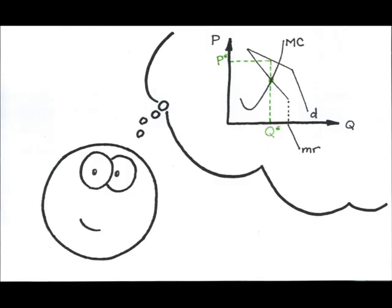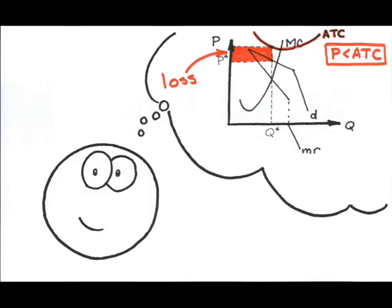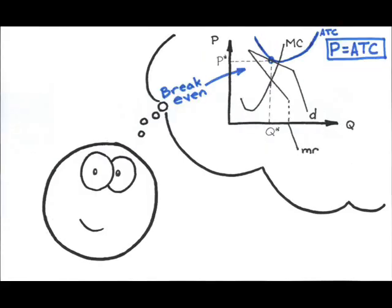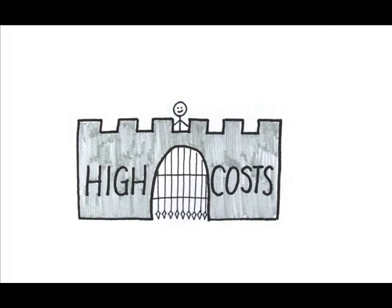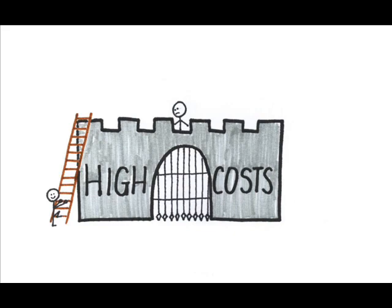In the short run, the firm could make money, lose money, or break even depending on the position of the average cost curves. If the firm makes money in the short run, the barriers to entry help to protect these profits, even in the long run. Remember, in an oligopoly market structure, it is difficult but not impossible to enter the market, so there may be some loss of profit to new rivals over time.